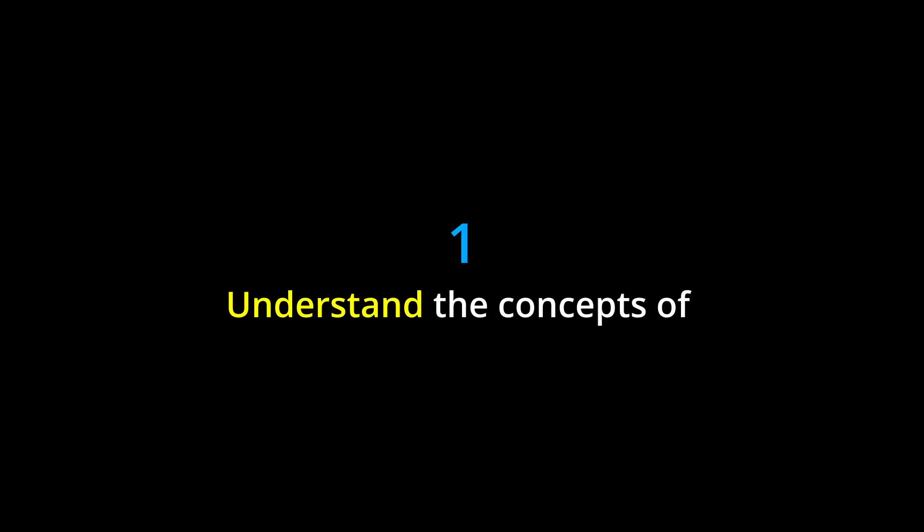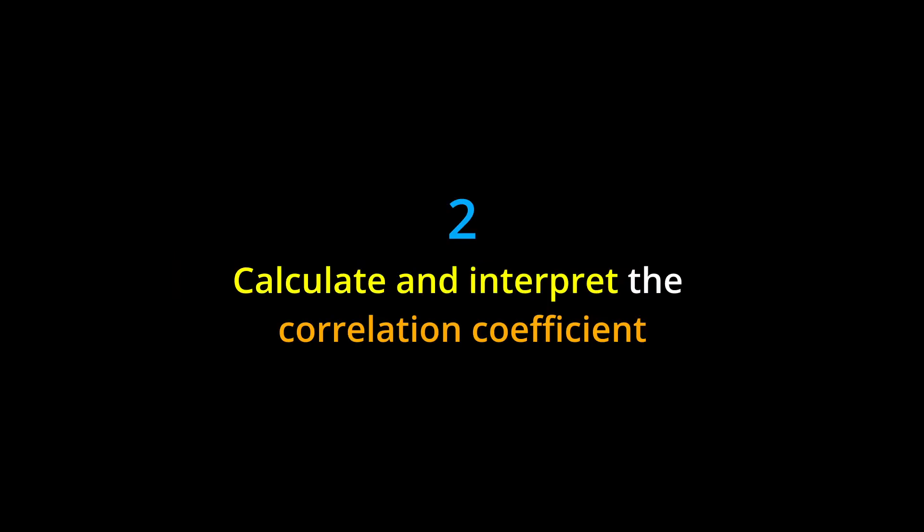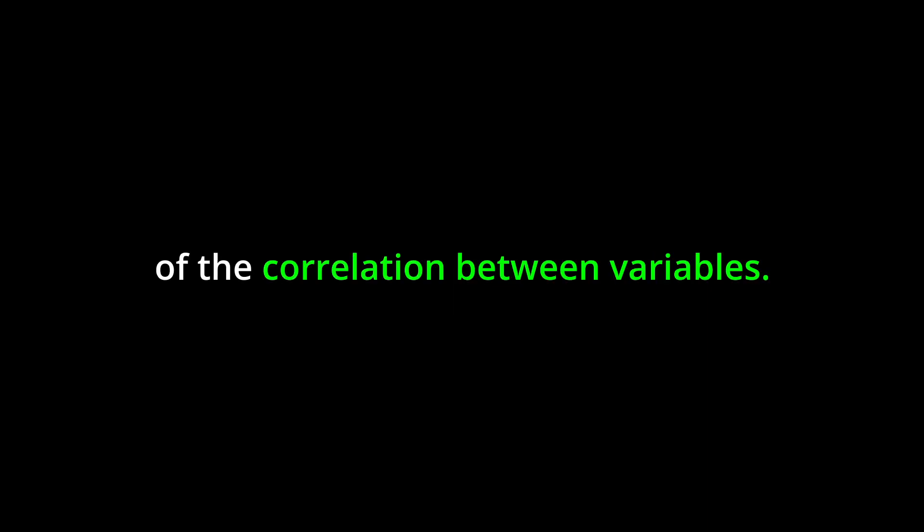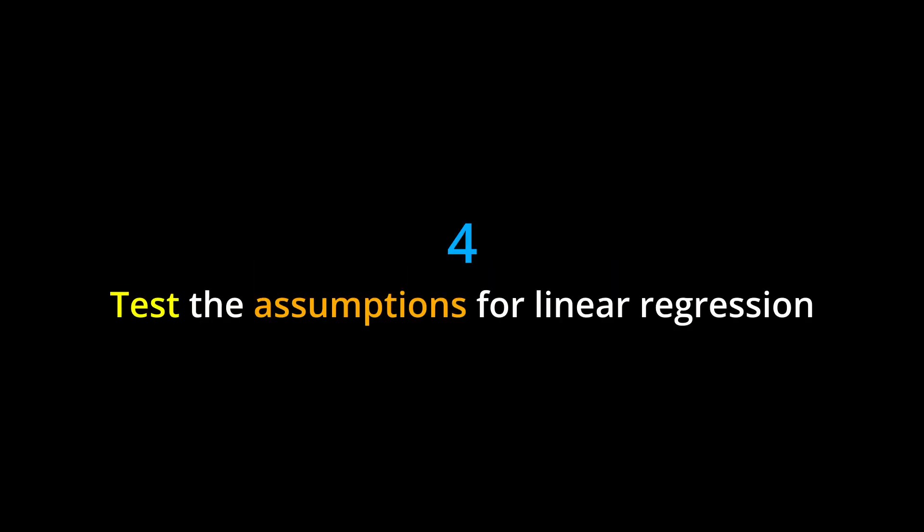Learning Objectives. By the end of this chapter, you should be able to: 1. Understand the concepts of correlation and regression analysis in finance. 2. Calculate and interpret the correlation coefficient to measure the strength and direction of the correlation between variables. 3. Use linear regression to predict one variable based on a different variable. 4. Test the assumptions for linear regression and interpret the results.